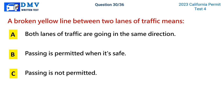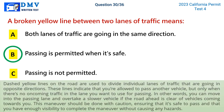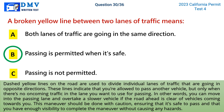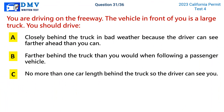Question 30: A broken yellow line between two lanes of traffic means. A) both lanes of traffic are going in the same direction, B) passing is permitted when it's safe, C) passing is not permitted. The correct answer is B. Dashed yellow lines divide individual lanes of traffic going in opposite directions. These lines indicate you're allowed to pass another vehicle, but only when there's no oncoming traffic in the passing lane. Move into the passing lane and overtake a slower vehicle only if the road ahead is clear, doing so with caution and sufficient visibility.